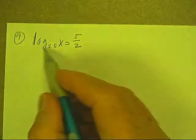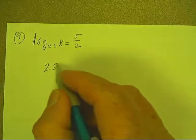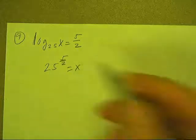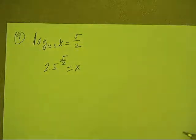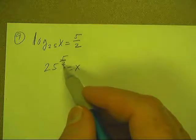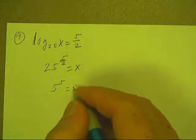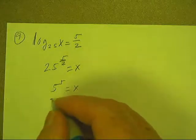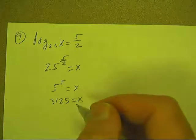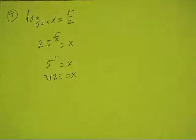Okay, welcome back. Here we've got log base 25 of x is 5 halves. So once I write this in exponential form, I can either take 25 to the fifth power and then take the square root of it, but it's easier to take the square root first. And I'm pretty sure that's 3125 because we had it a while ago. So there we go.